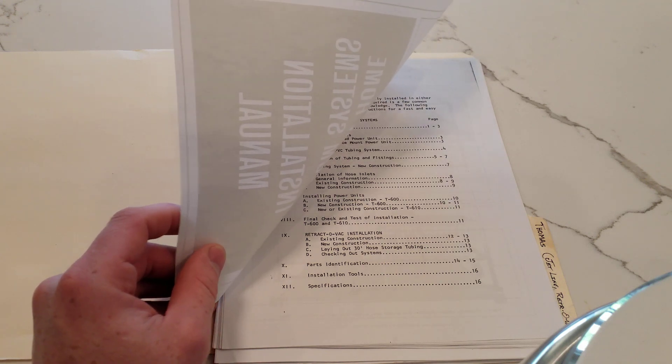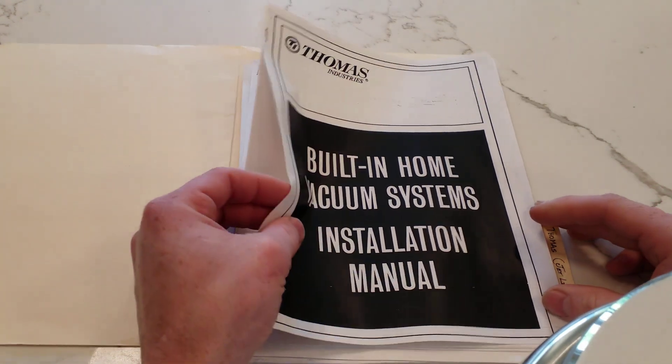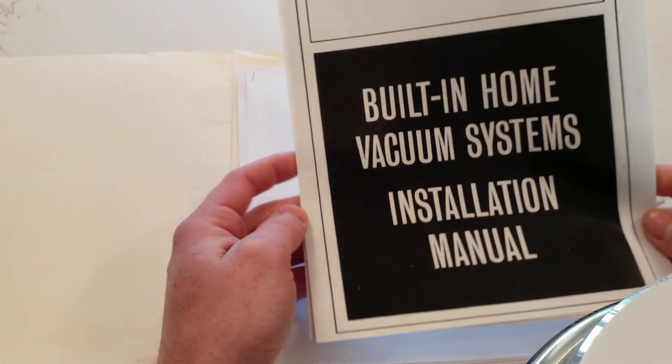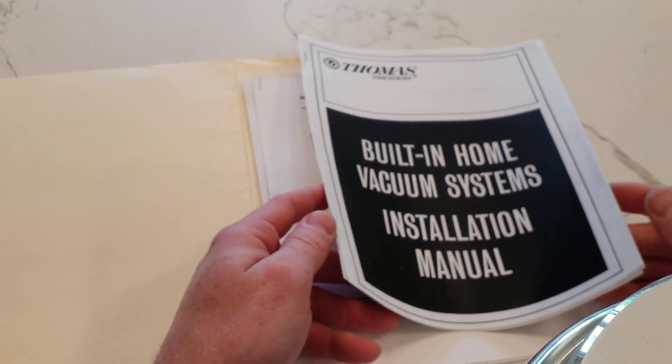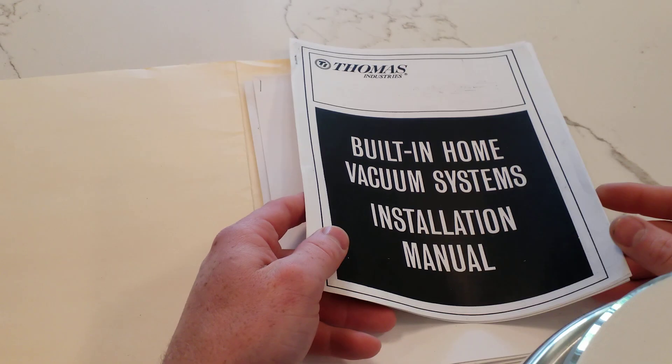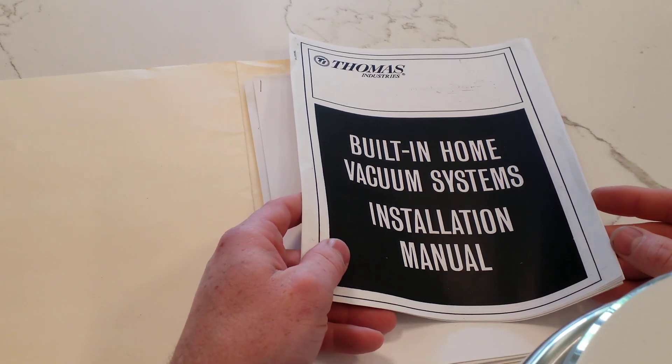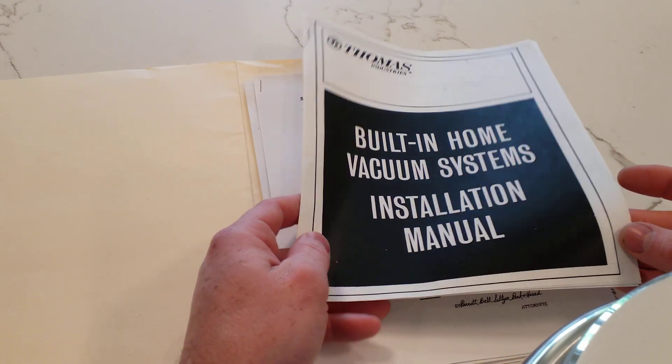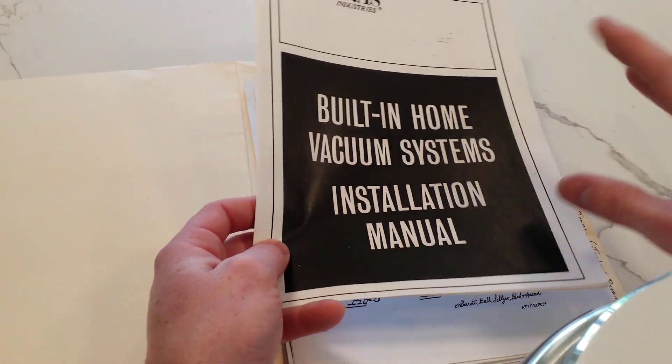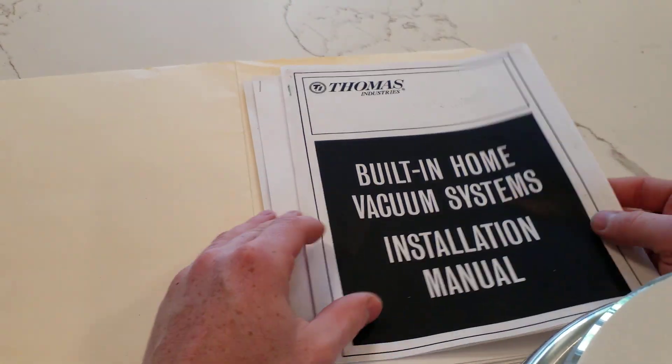I guess you could call this the granddaddy of hide-a-hose, and this video ties in with the video I did with my good friend Evan in Pittsburgh, Pittsburgh central vacuum. He's in possession of a display board, including the original retractable valve, and this is like what you'd exhibit at a home show.